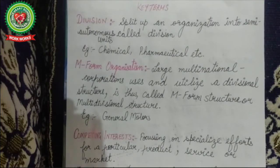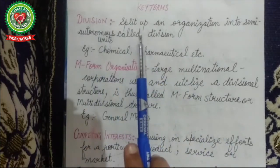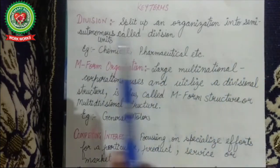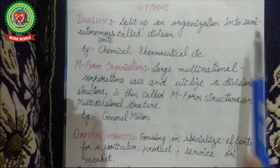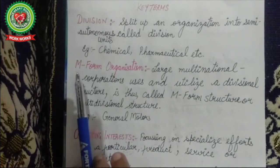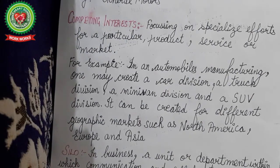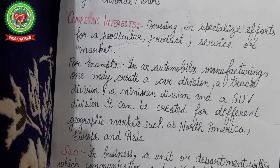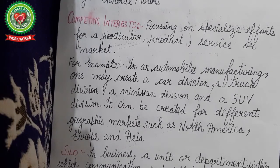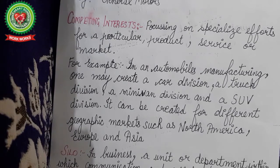Now let us cover key terms with suitable examples. First is division — splitting up an organization into semi-autonomous units. Semi means they are not fully independent because ultimate authority lies with top management. Next is competing interests — focusing on specialized efforts for a particular product, service, or market.